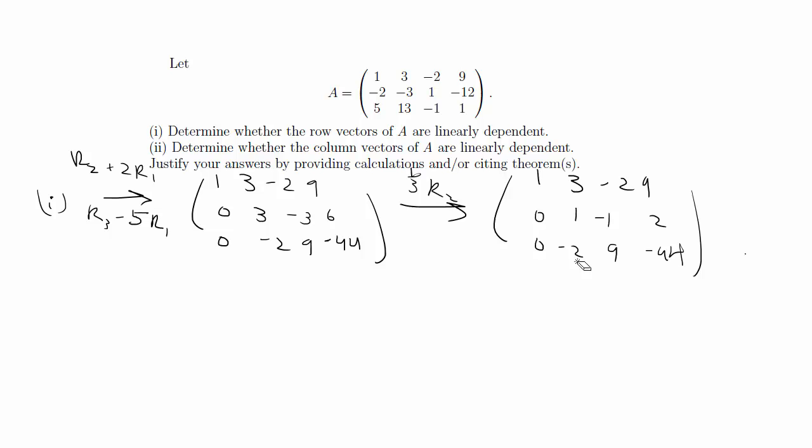So the next thing I did was r3 plus 2r2, and that gives me 1, 3, negative 2, 9, 0, 1, negative 1, 2, 0, 0, 7, negative 40.